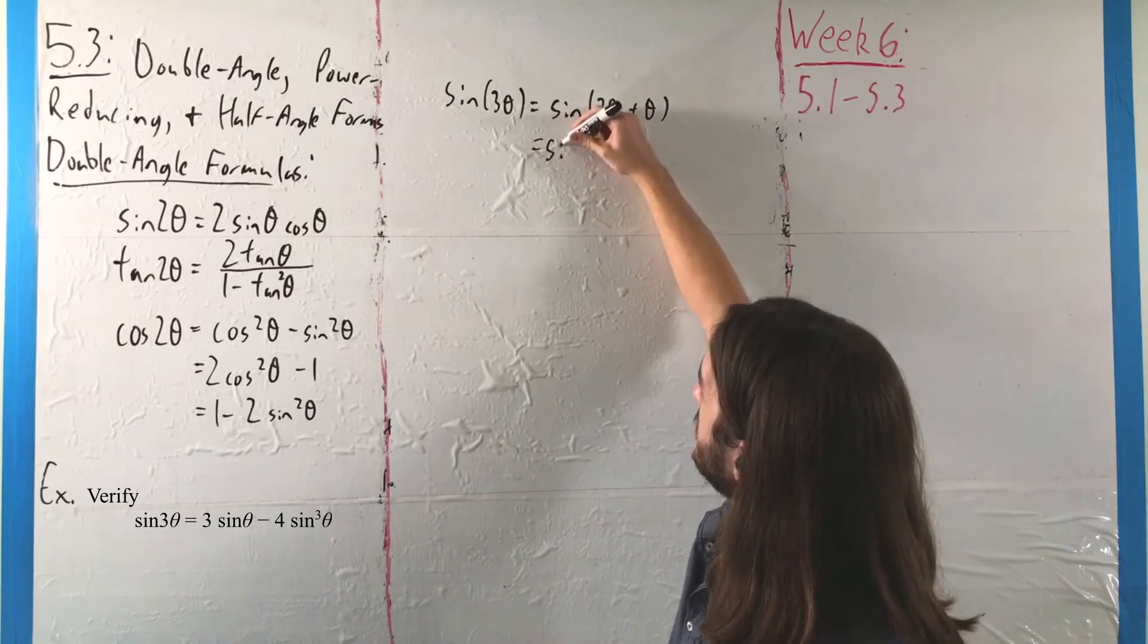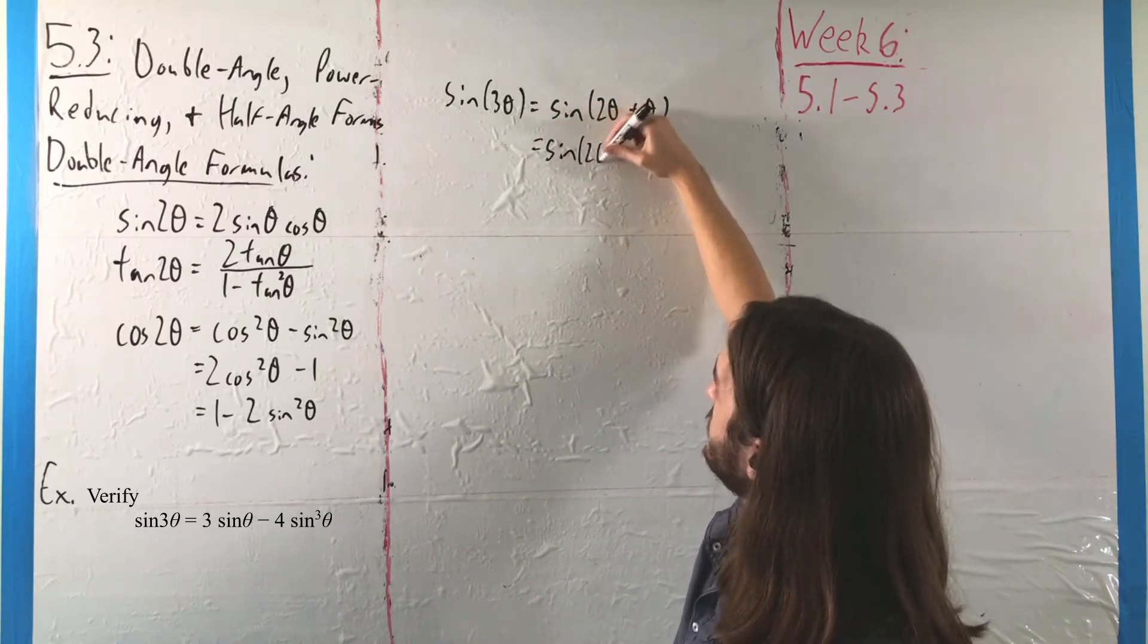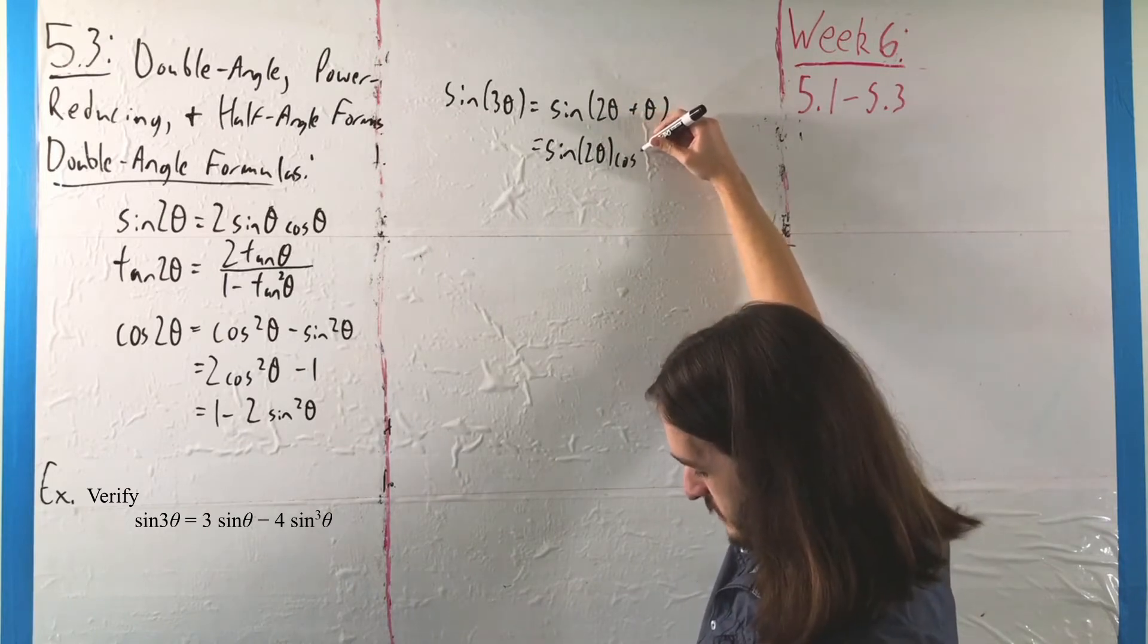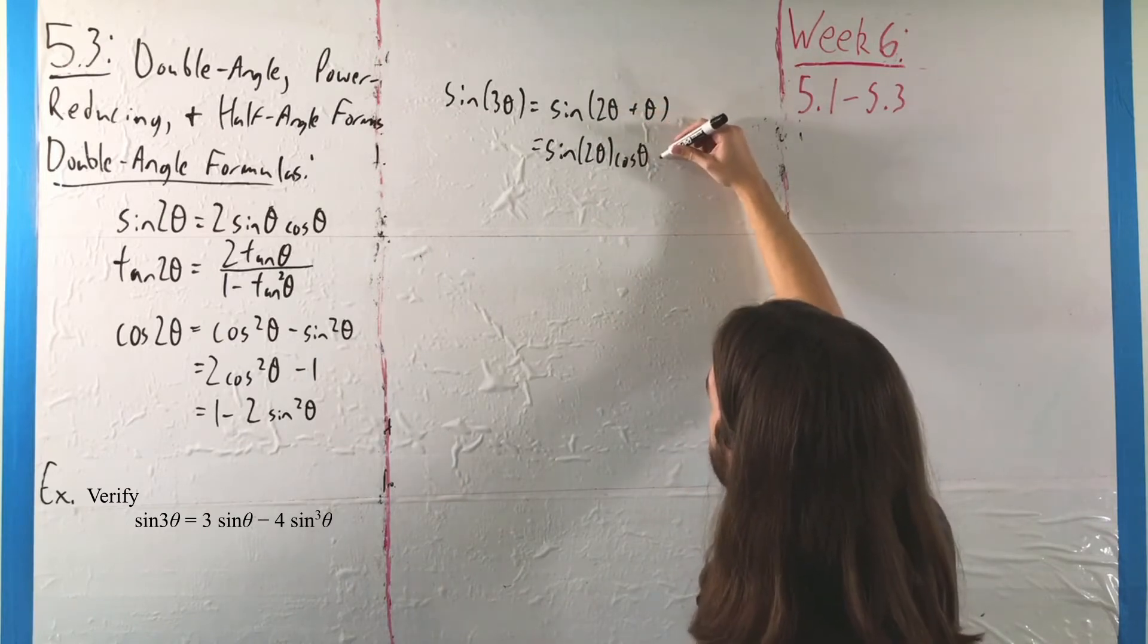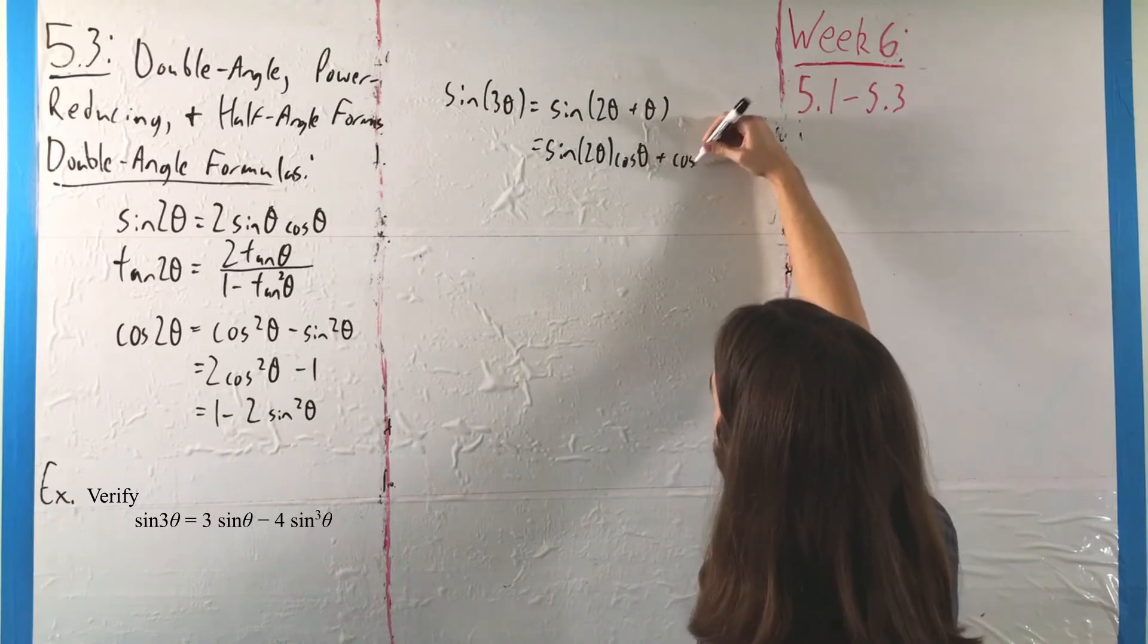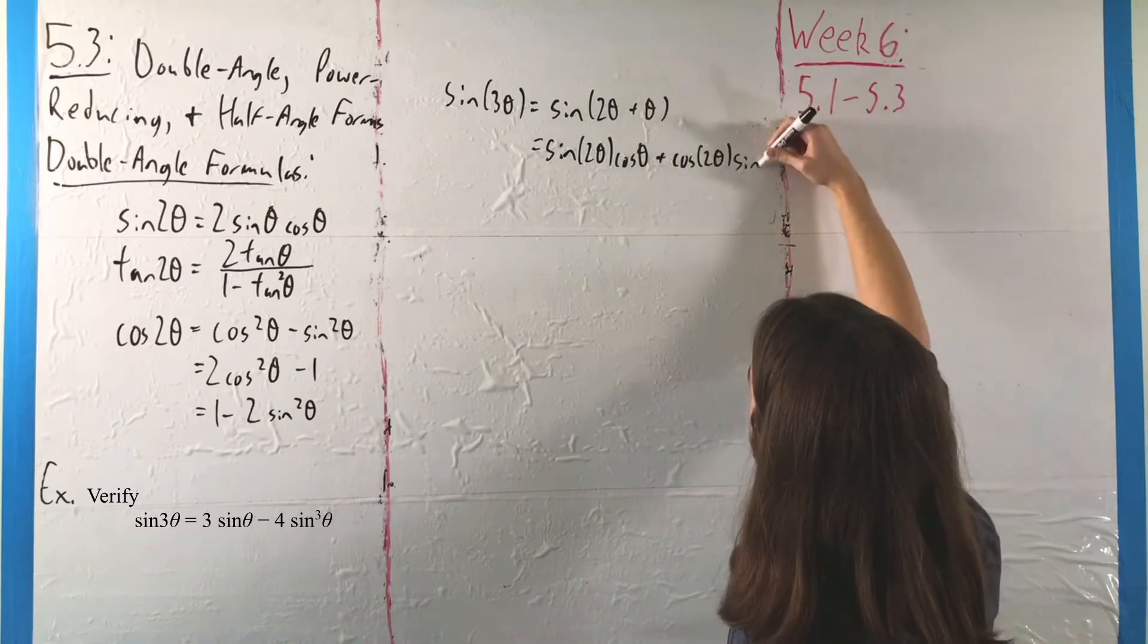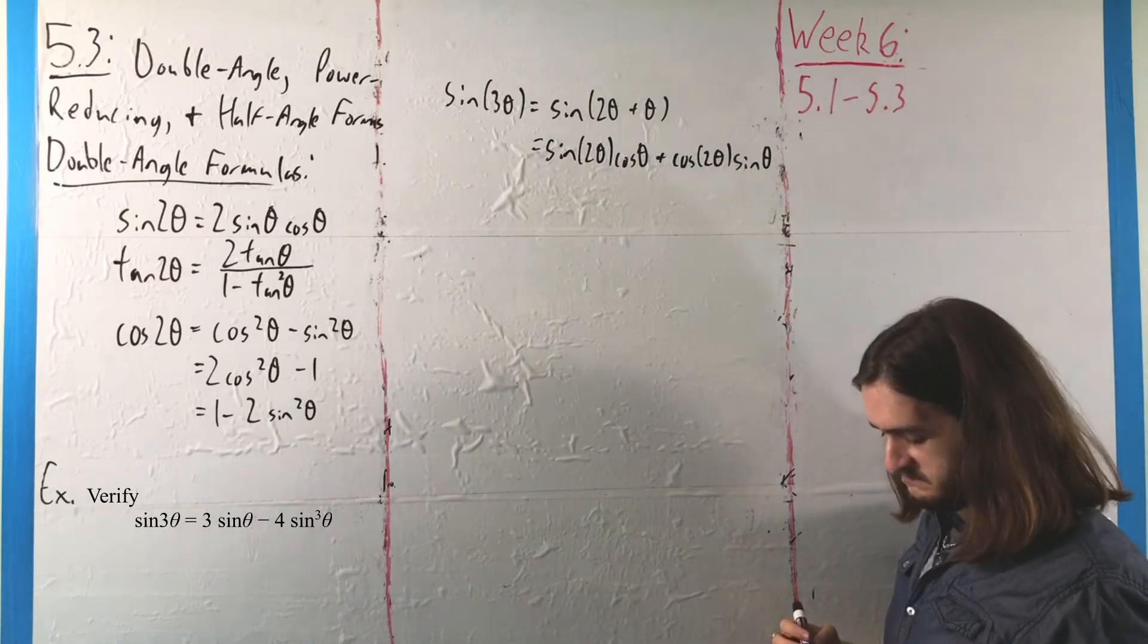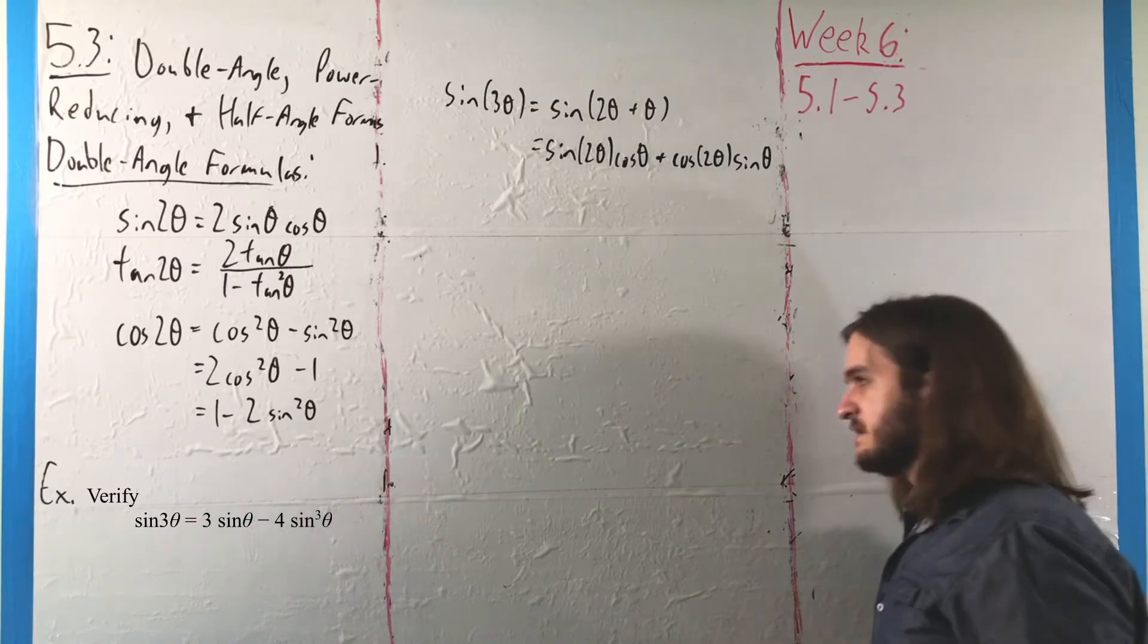So what we'll end up with is sine of 2 theta times cosine of just 1 theta plus cosine of 2 theta, oh, that's much better, times sine of 1 theta.